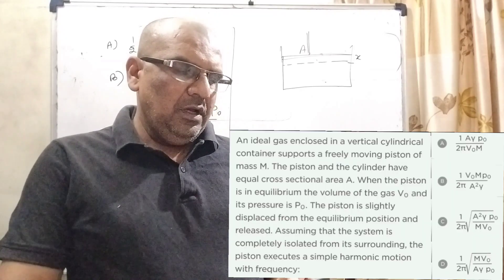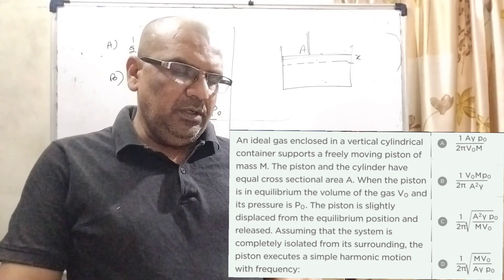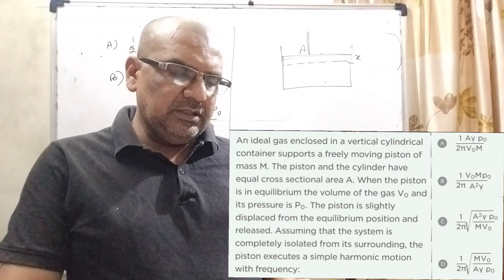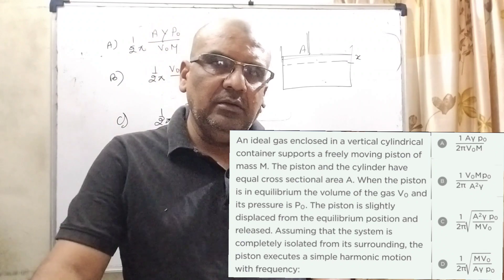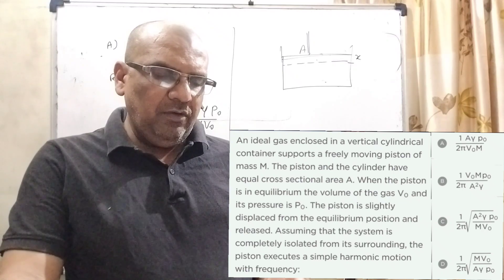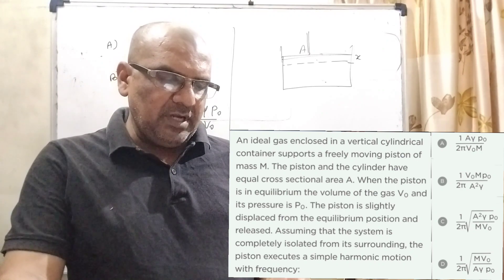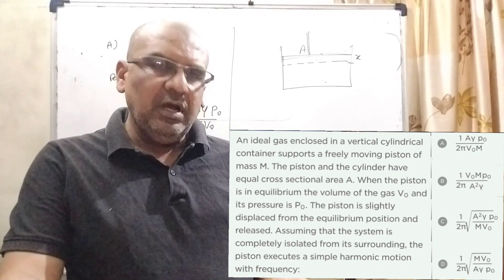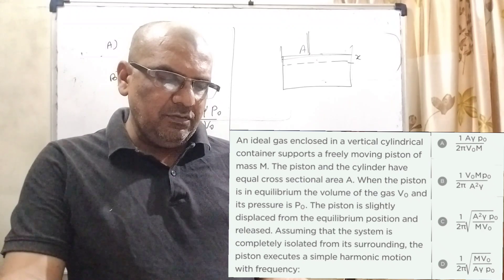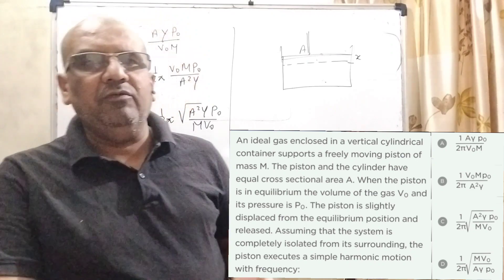Now here is the question. An ideal gas enclosed in a vertical cylindrical container supports a freely moving piston of mass m. The piston and the cylinder have equal cross sectional area, capital A. When the piston is in equilibrium, the volume of the gas is V0 and its pressure is P0. The piston is slightly displaced from the equilibrium position and released. Assuming that the system is completely isolated from its surroundings, the piston executes simple harmonic motion with frequency.